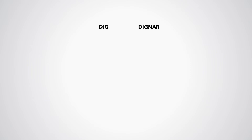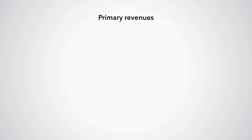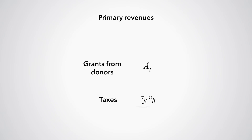In the DIG and DIGNAR models, it is assumed that the government incurs the following primary expenditures: public investment spending, denoted by IGT, and other government current spending and transfers, denoted as GT. In terms of primary revenues, the government receives grants from donors, AT, denominated in foreign currency, and taxes, represented as tau-JT times N-JT, where tau-JT is the tax rate and N-JT represents the tax base J, which could be consumption or any income from productive factors such as labor income.